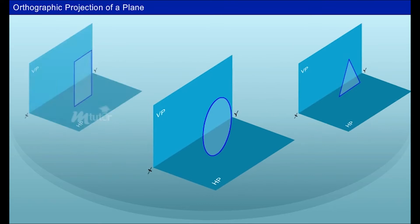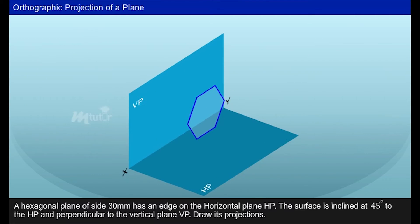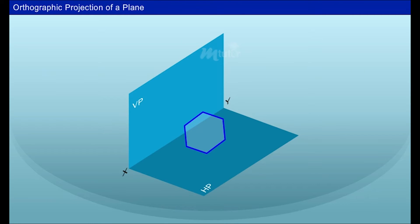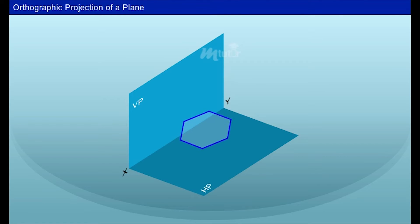Let us solve a problem to understand the orthographic projection of a plane. A hexagonal plane of side 30 mm has an edge on the horizontal plane. The surface is inclined at 45 degrees to the HP and perpendicular to the vertical plane VP. Draw its projections. Initially, the simple position of the hexagon is drawn, as it is very difficult to directly recognize its inclined position. Hence, we should start with the simple position of the plane hexagon — that is, its true shape — and from this, draw its inclined position.